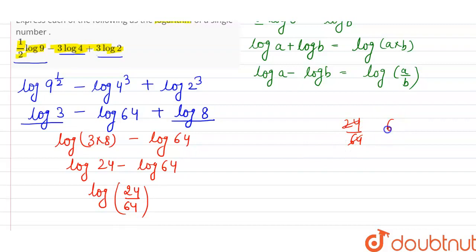4 into 6 is 24. 4 into 16 is 64. Then 2 into 3 is 6. 2 into 8 is 16. So in single terms, its value will be log 3 over 8.